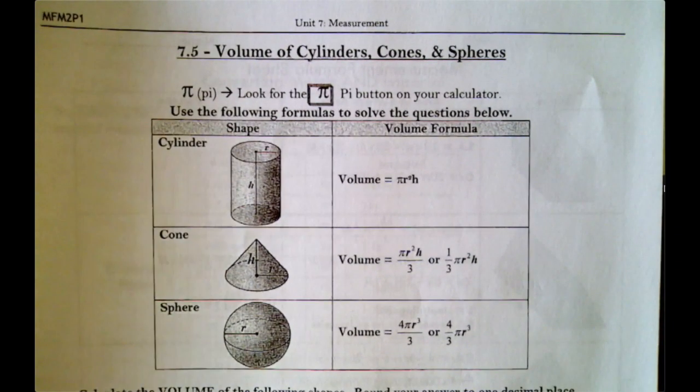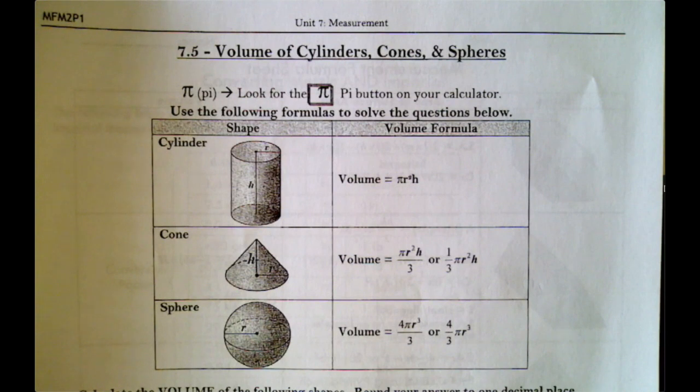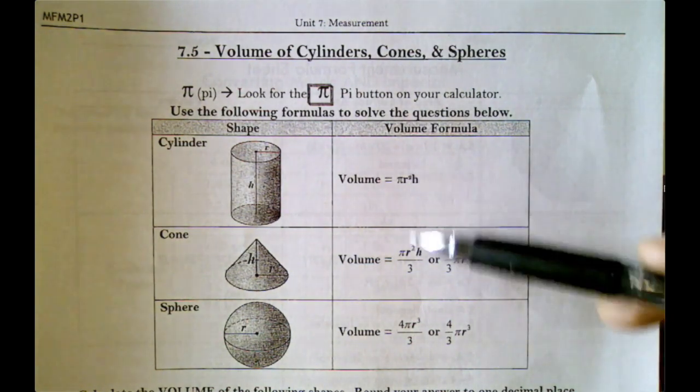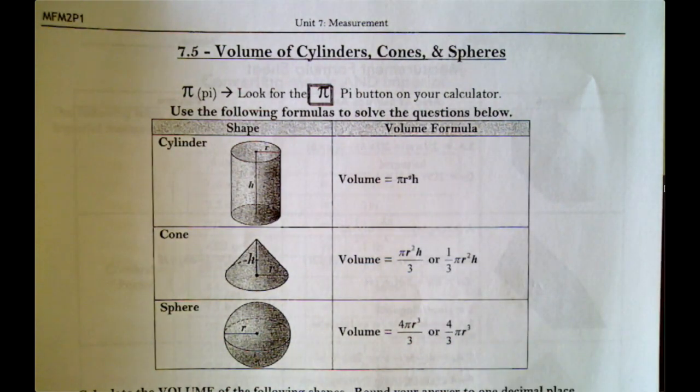Okay, this is lesson 7.5, volume of cylinders, cones, and spheres. Much like the last lesson, we're gonna do one example of a cylinder, one of a cone, and one of a sphere. I'll leave the other ones for you. They're actually the exact same shapes as the last lesson, but instead of finding surface area we're going to find volume. I've listed the volume equations here. I'm going to use the first version of each one for our calculations. Let's start with cylinder.